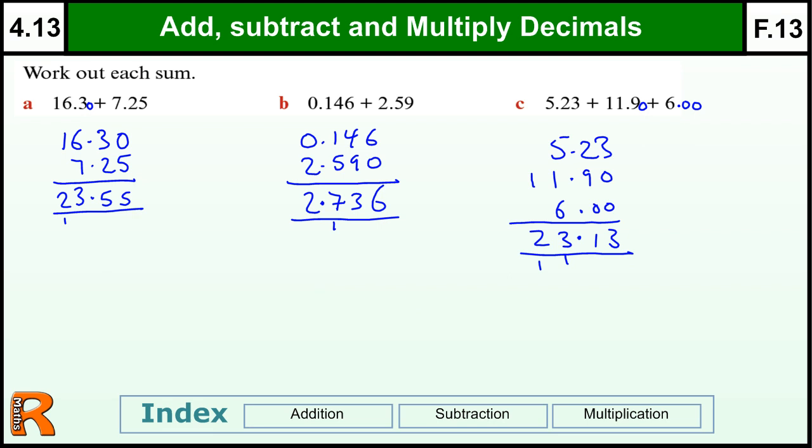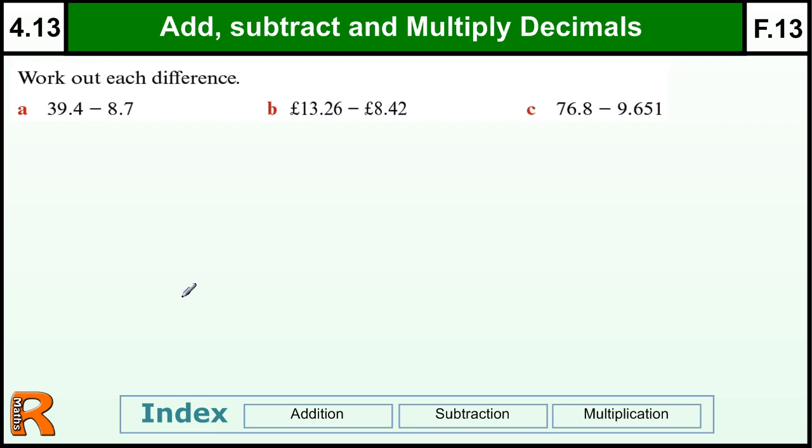OK, decimal subtraction, I'm going to show you two methods. I'm going to show you the standard method, 39.4 take away 8.7, and again, as long as you line up decimal points, this is just the same as a standard subtraction with that decimal point, and the decimal point is just going to go underneath where it was before. So, four take away seven I can't do, so I need to borrow from the nine into that column, which makes it a ten, so fourteen take away seven is seven, eight take away eight is zero, three take away zero is three.